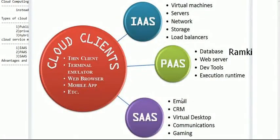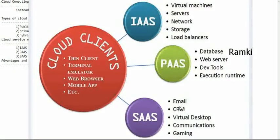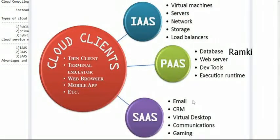Software as a Service includes emails, CRM — Customer Relationship Management. Salesforce CRM is one of the cloud computing services. Software as a Service provides CRM and customer relationship management, virtual desktops, communications, and gaming. At the end, the software product provides all the services. AWS is nothing but cloud computing services. To summarize: infrastructure is hardware, platform is the operating system, and software as a service covers the application layer.